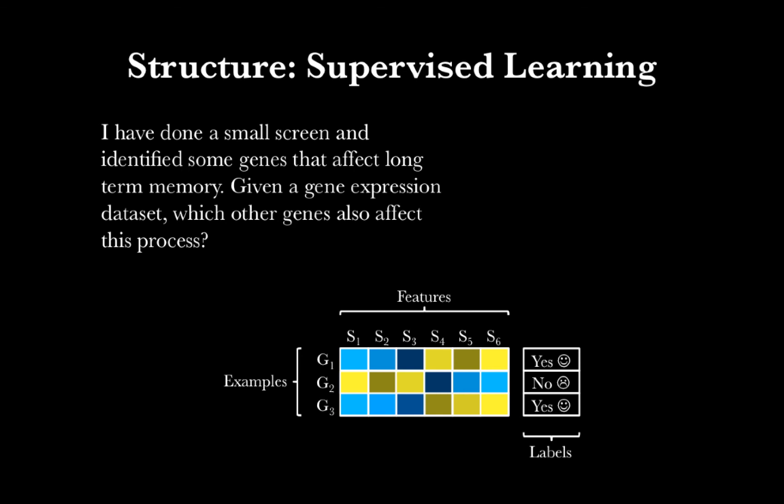Labels are the characteristics associated with the sample that we really care about and that we want the computer to predict in the future. These labels can be divided into things canonically called positives — the genes we care about. Here we're trying to find additional genes that affect this process, so we want to find more genes where the label is yes. We call the yeses positives and the noes negatives. So gene 3, because it's a yes, is a positive example.